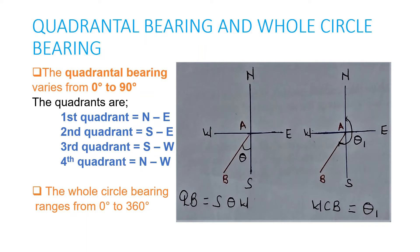Therefore, the Quadrantal Bearing will be South theta West. For the Whole Circle Bearing, we are measuring our line from the north pole clockwise. So it's from the north pole clockwise, and therefore our Whole Circle Bearing will be the angle theta one.